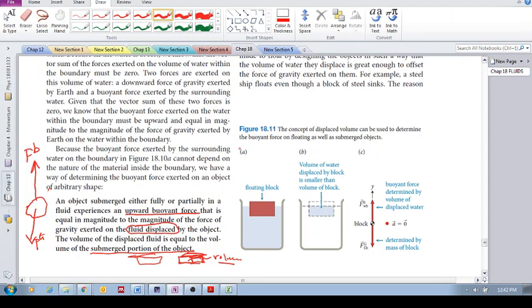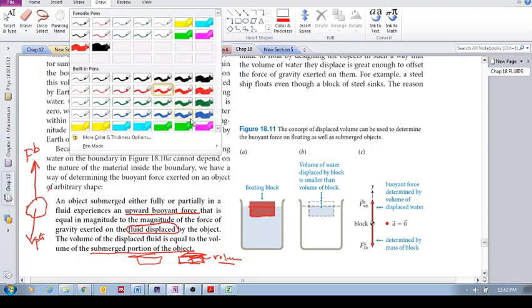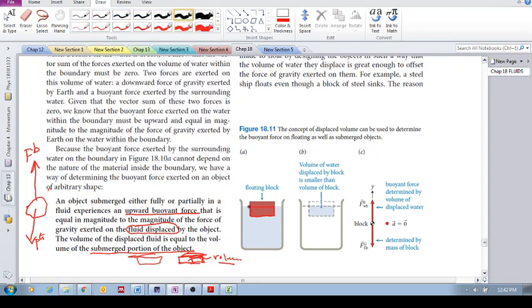And remember, Archimedes Principle is all based on the amount of displaced fluid. So for example, here is an object. We don't know what this block is made of. And what is the displaced part? Right, that is the displaced part. It changed colors, but you can see it. Right, there, that's the displaced part.